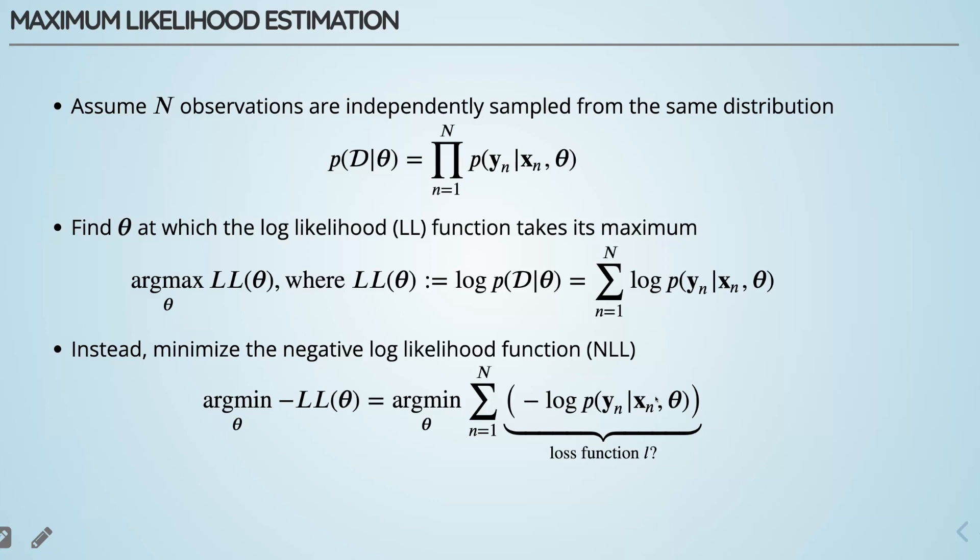Let's say we have N observations independently sampled from the same distribution. We can find something known as the likelihood function, which is the probability that the data D is produced by a setting of parameters theta. Because of the independence assumption, we have this product of probabilities for individual observations. The goal is to find the value of theta that maximizes this likelihood function. Because working with a product of terms is difficult to optimize, it is very common to take the logarithm of this function.